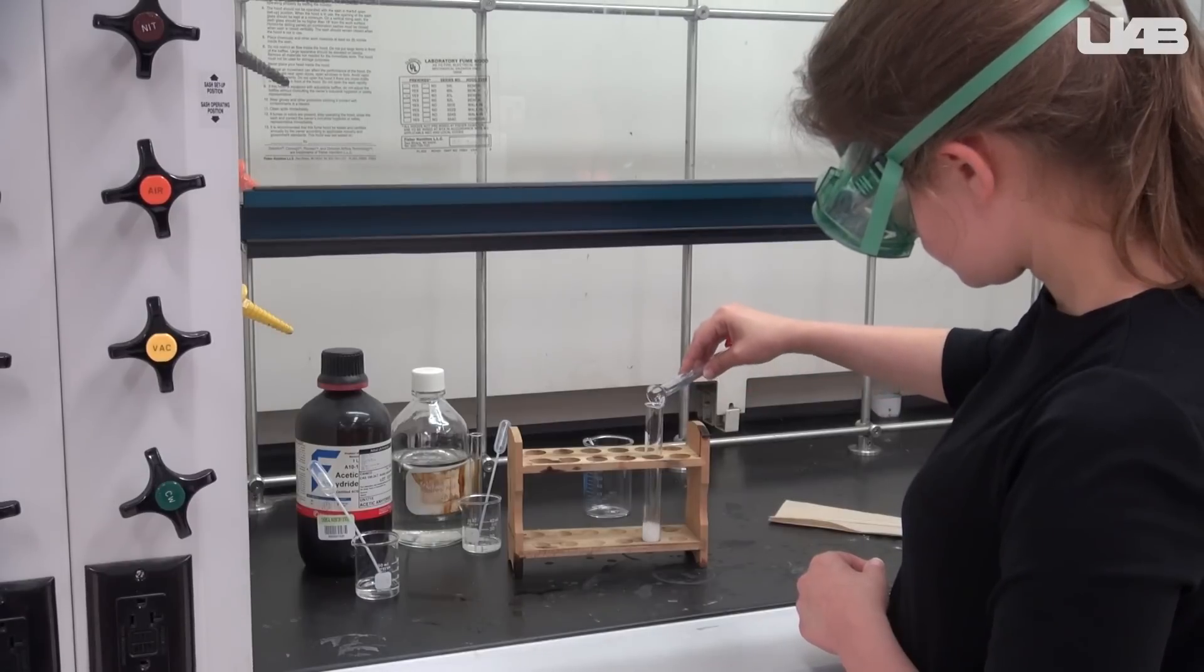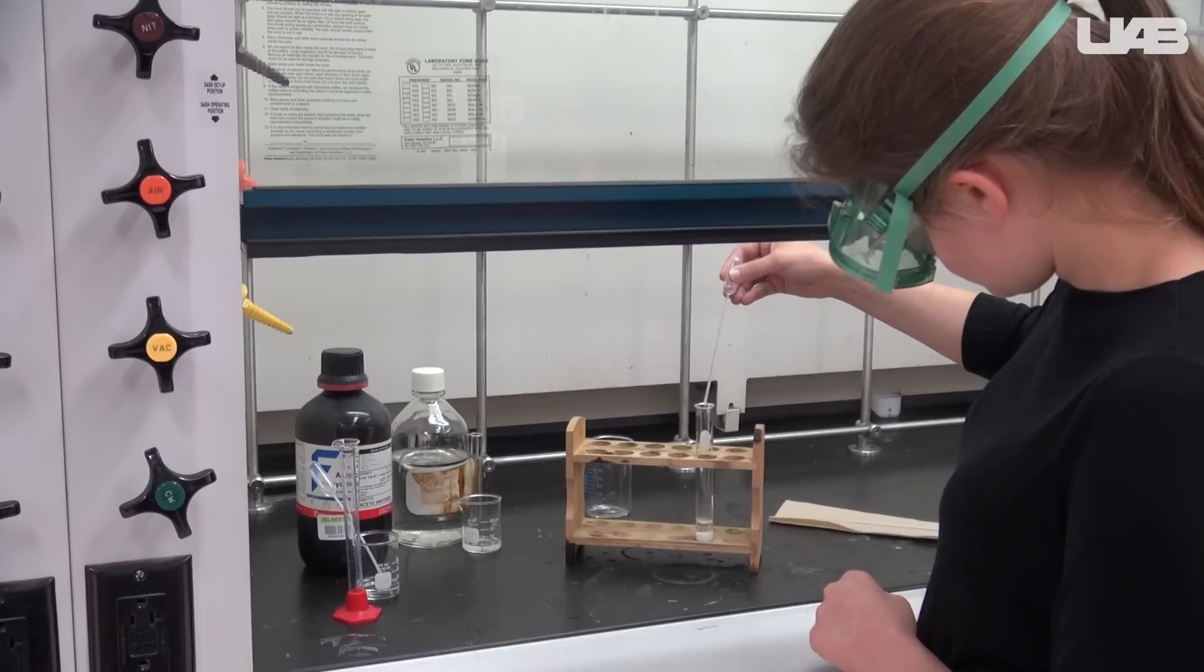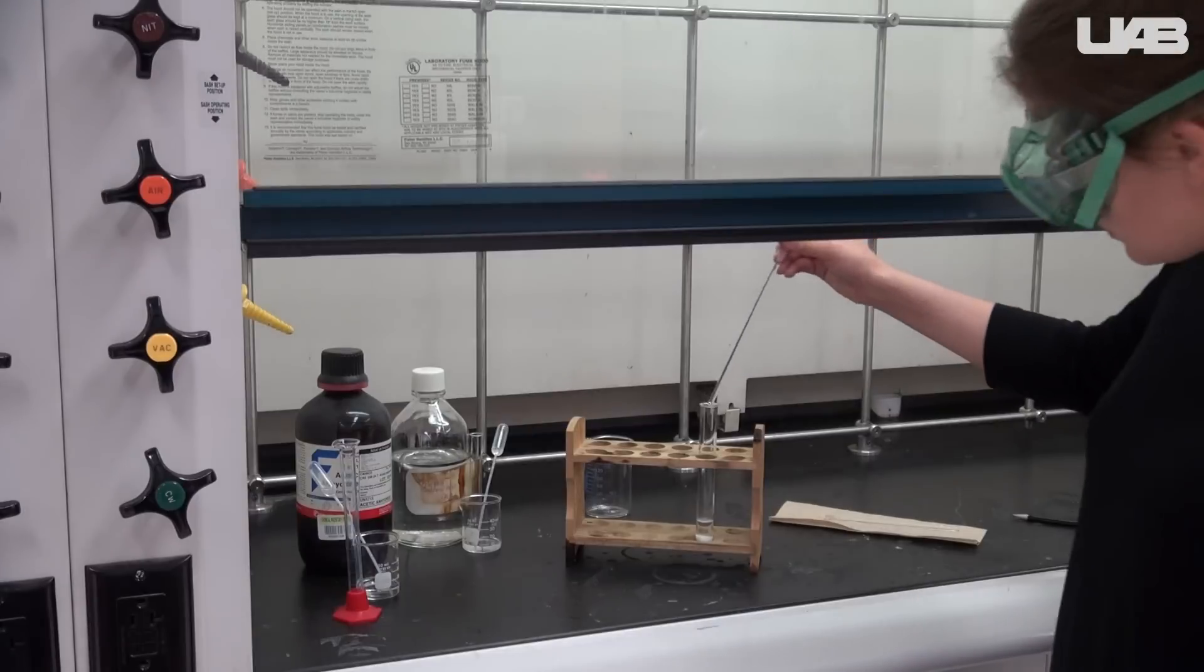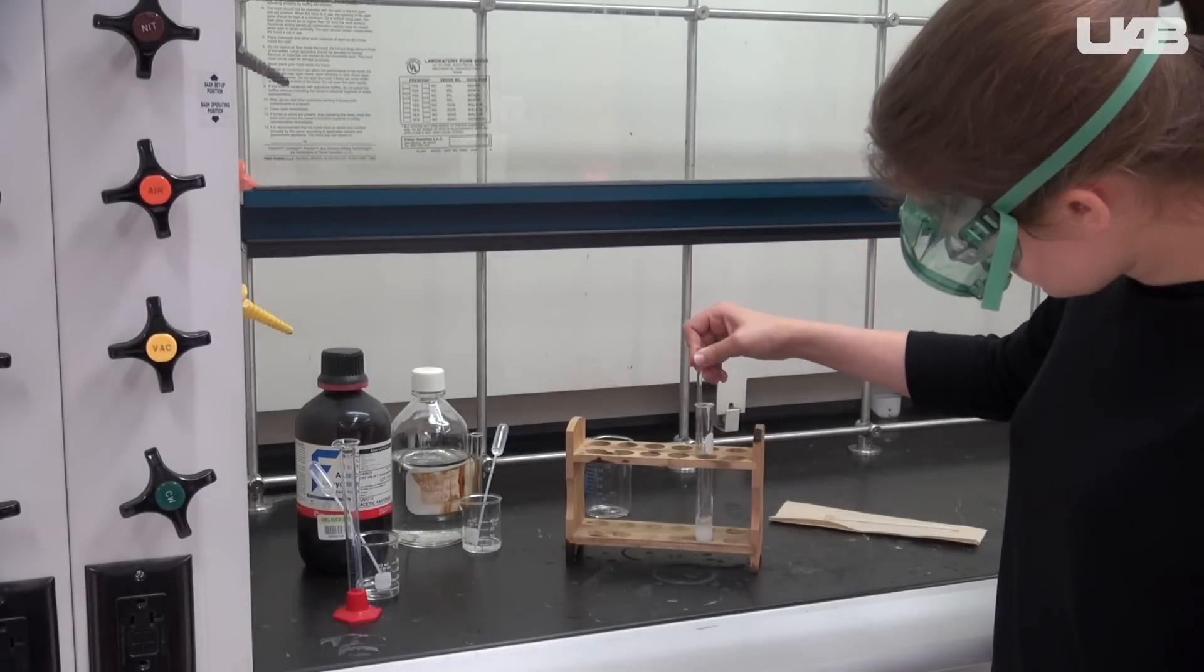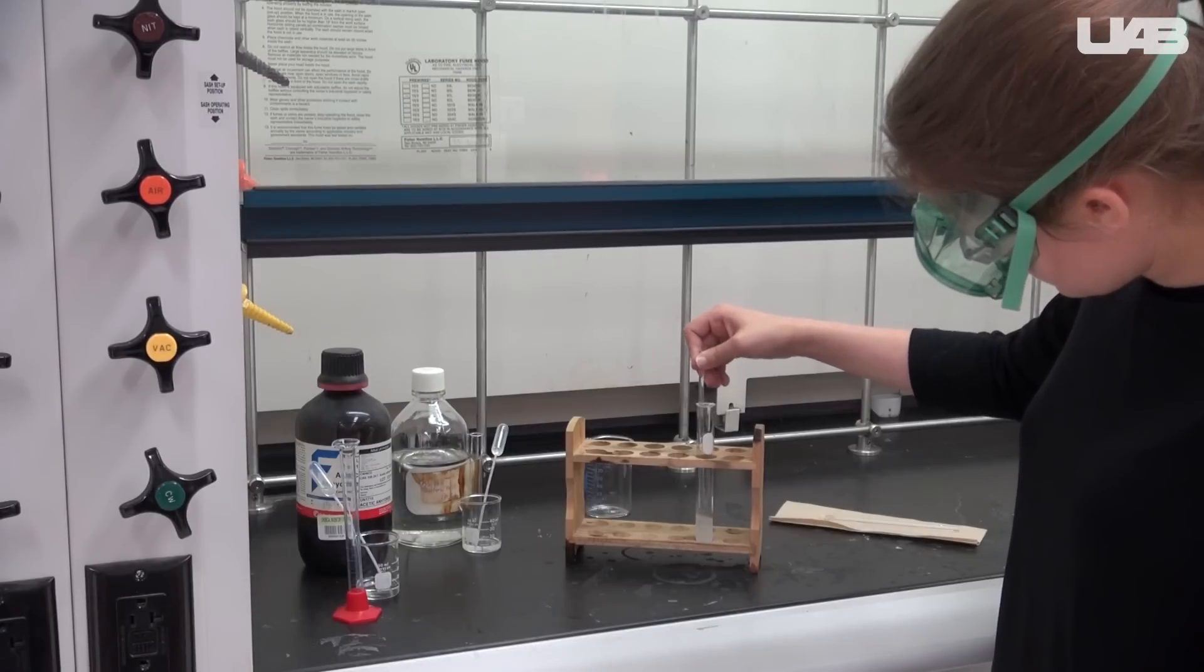Pour it into the test tube with the salicylic acid and add three or four drops of sulfuric acid. Then use a glass rod to mix it. It should slowly go from cloudy to clear as everything goes into solution.